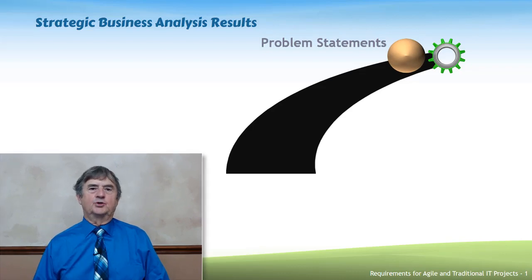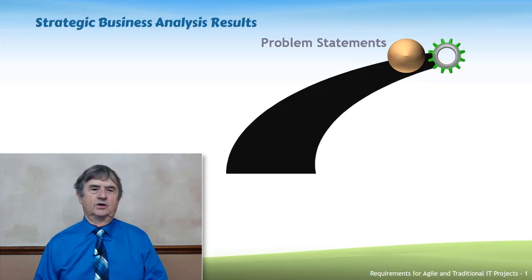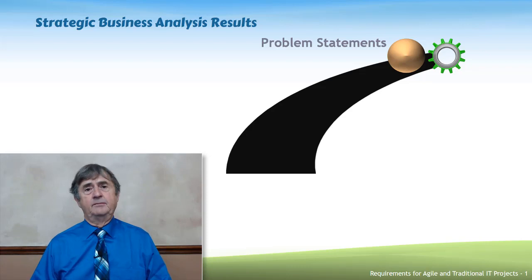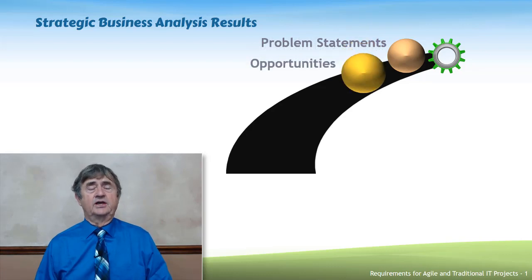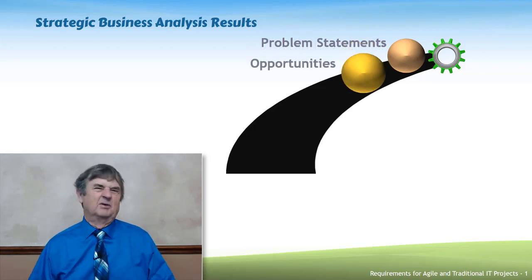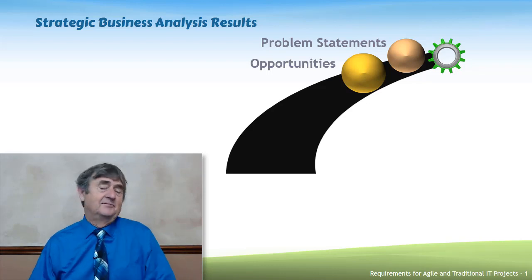Strategic business analysis looks at a larger part of the organization, or the organization as a whole, and does things like creating business problem statements and identifying what's wrong with the way things work today. Conversely, it can also look for opportunities, which is the flip side of a problem. Opportunities and problems are like the two sides of a coin — the glass is half full or the glass is half empty.